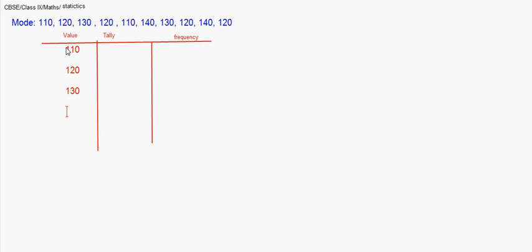Here we have values: 110, 120, 130, and 140. 110 is the first observation, make a tally here. Then it is 120, then 130, then again 120, then 110, 120, then 140, then another 130, then another 120, another 140, and again a 120.